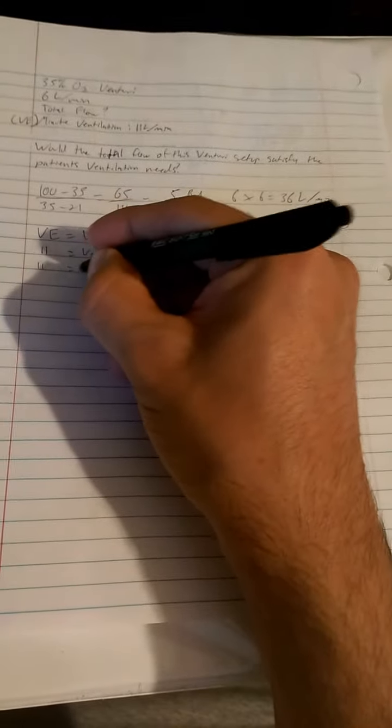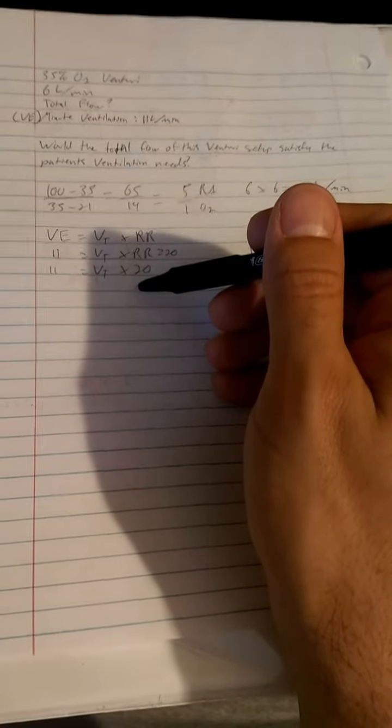So you have 11 equals tidal volume times 20. Now guys, this is just algebra. To finish up the equation here, you divide both sides by 20, those cancel. So your tidal volume is equal to 11 over 20.